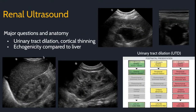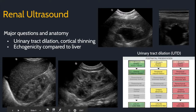VCUGs go hand in hand with renal ultrasounds. On these renal ultrasounds, you grade any urinary tract dilation — do not use the word hydronephrosis in pediatrics with this scale. You also look at the corticomedullary differentiation, the morphology of the kidneys, and if there are any masses.